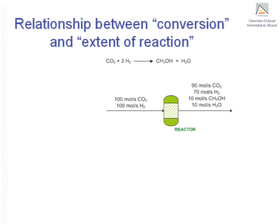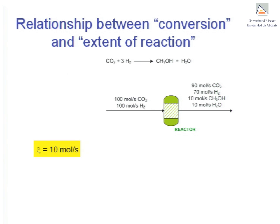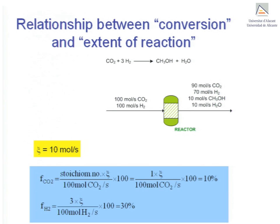On the other hand, it is very important to know the relationship between conversion and extent of reaction. In this case, the extent of reaction is 10 moles per second. The conversion of both reactants may be expressed in terms of this quantity using stoichiometric coefficients. The numerator in carbon dioxide's conversion can be expressed as its stoichiometric coefficient multiplied by the extent of reaction, ξ, giving 10%. For hydrogen, the numerator is 3 times the extent of reaction, since its stoichiometric coefficient is 3.